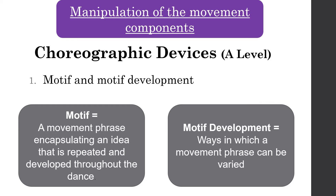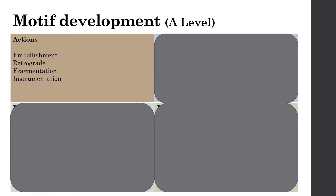You can change a motif by changing the actions, the space, the dynamics, and the relationships. Looking at actions: one way is embellishment — adding that extra bit of sparkle. It might be adding an arm movement, a shoulder roll, or a flex foot on the end. It's embellishing that final element.